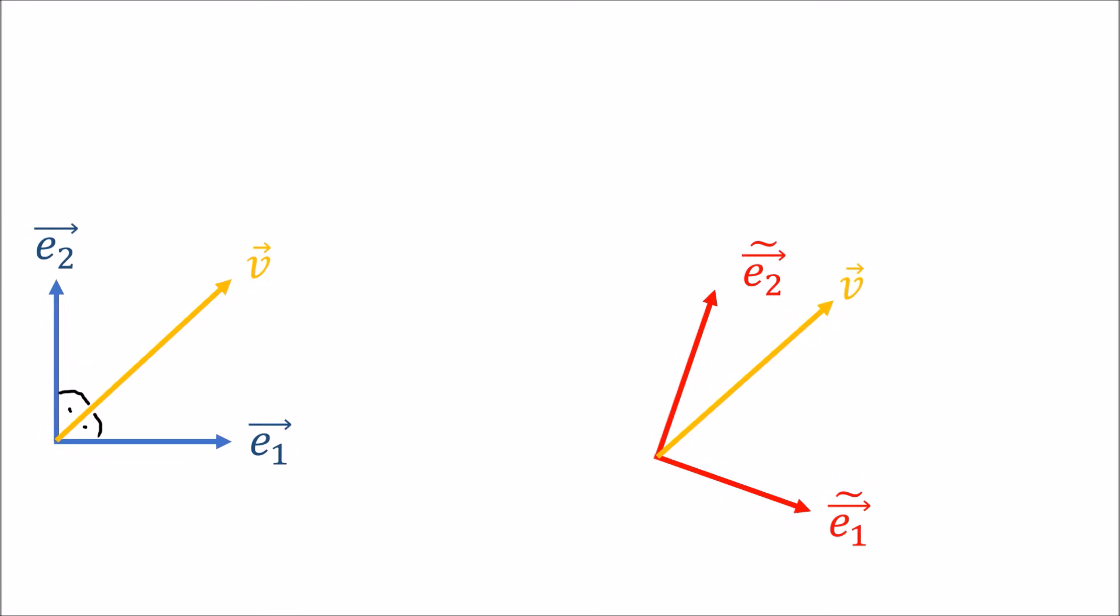Now, what would happen if we rotated the basis clockwise? Okay, so the new basis would look something like this. Now, what about the components of V? Well, if you look at the angles, the angle V makes with E1 tilde is actually bigger than the angle V makes with E2 tilde.